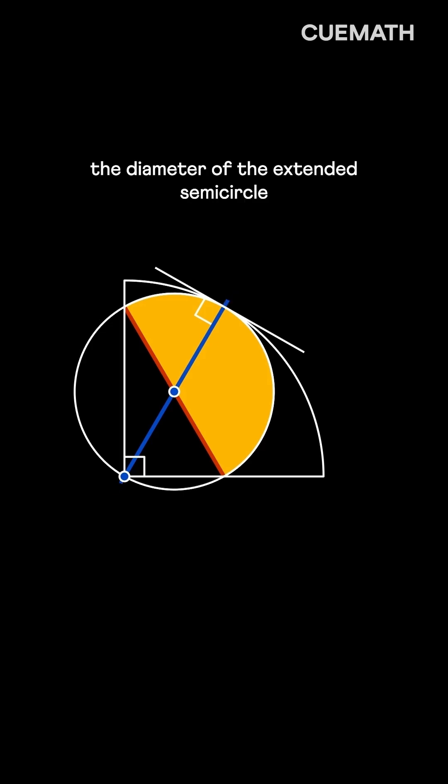Hence, the diameter of the extended semicircle is also the radius of the quarter circle.